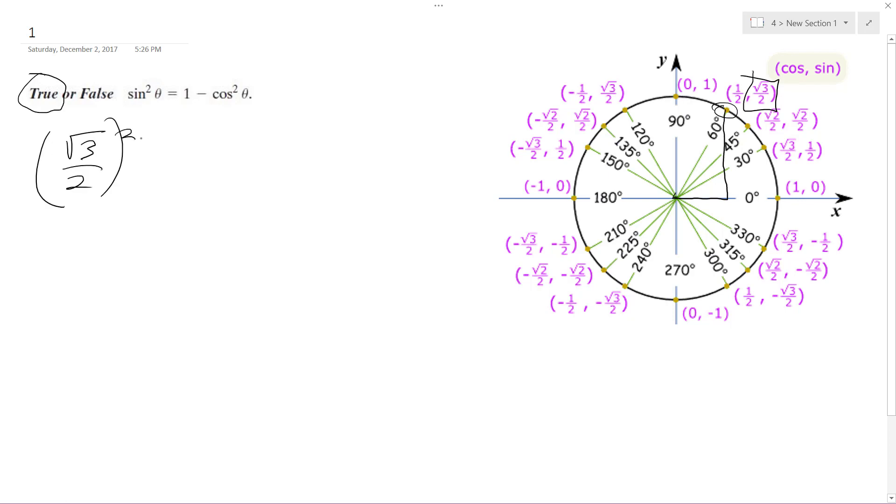And then you square it. And then we have one minus, and then the cosine's one half, so that's one half squared.